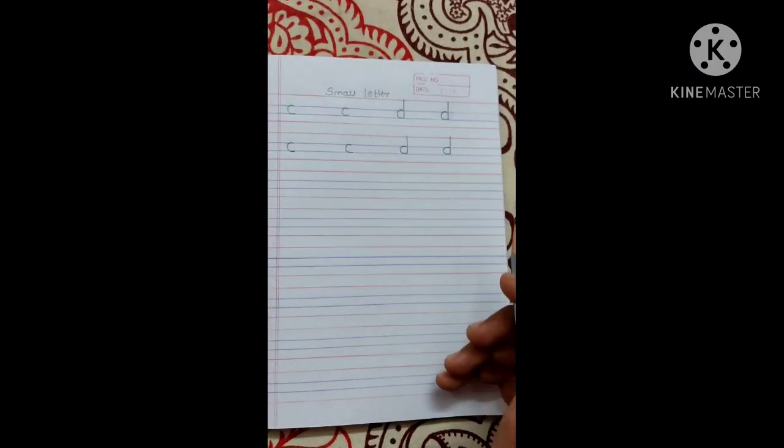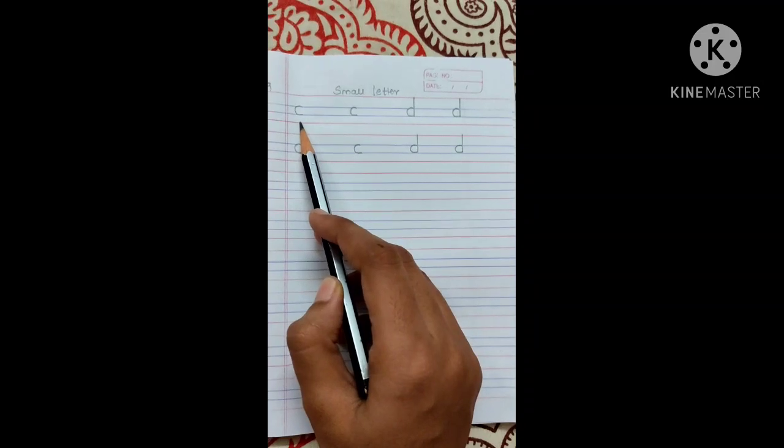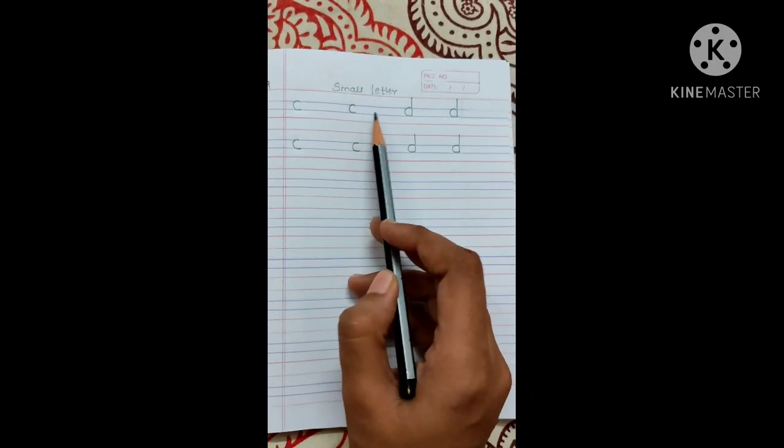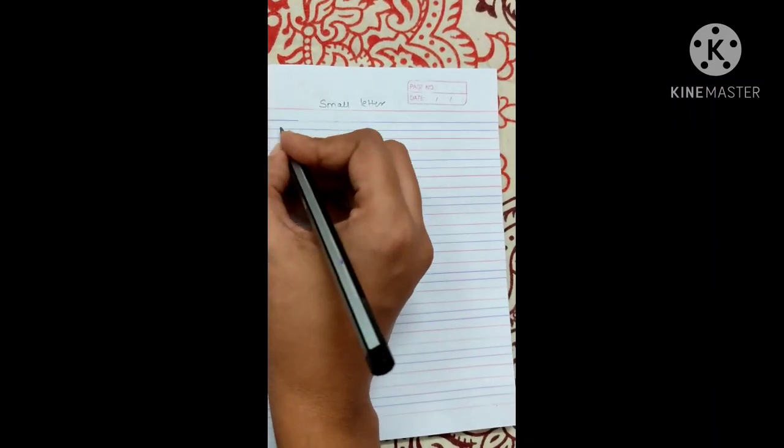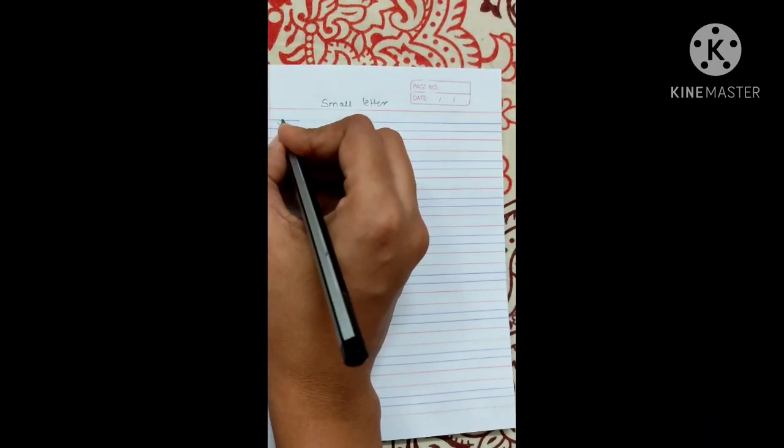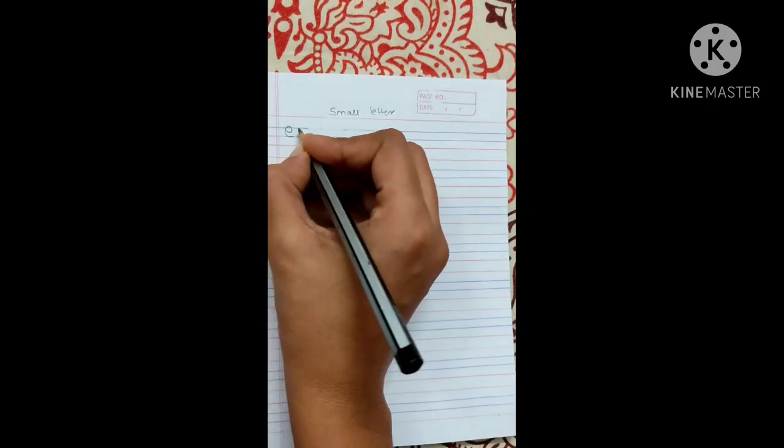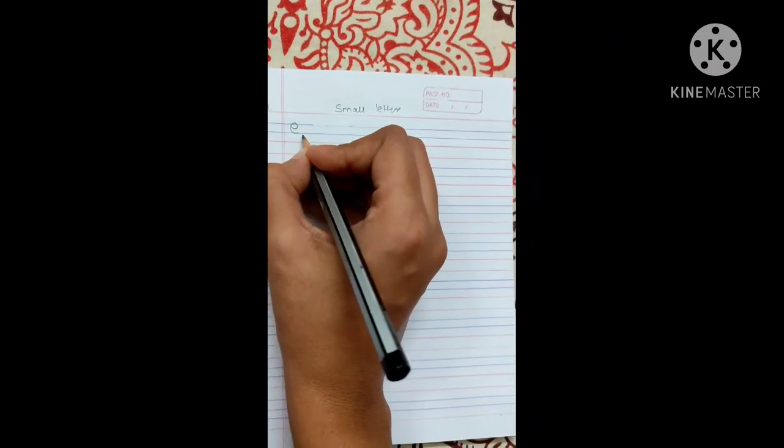Before we have learnt letters C, small c and d. Today we are going to learn small e, that we will also be going to write on a red line only.